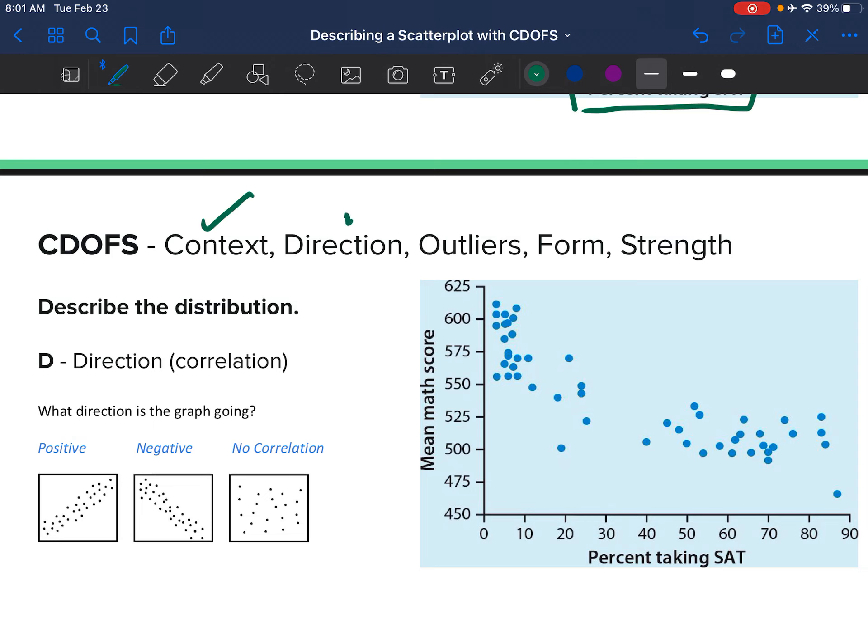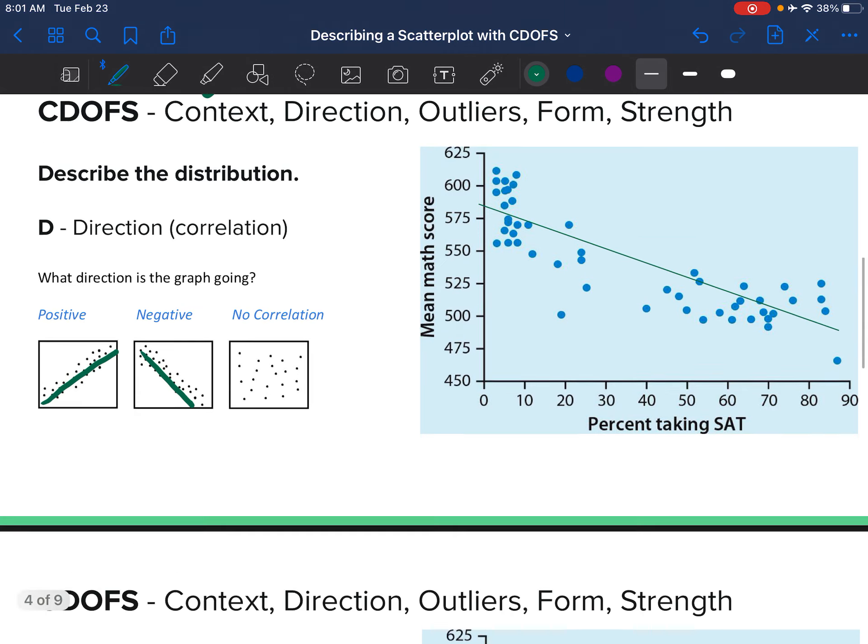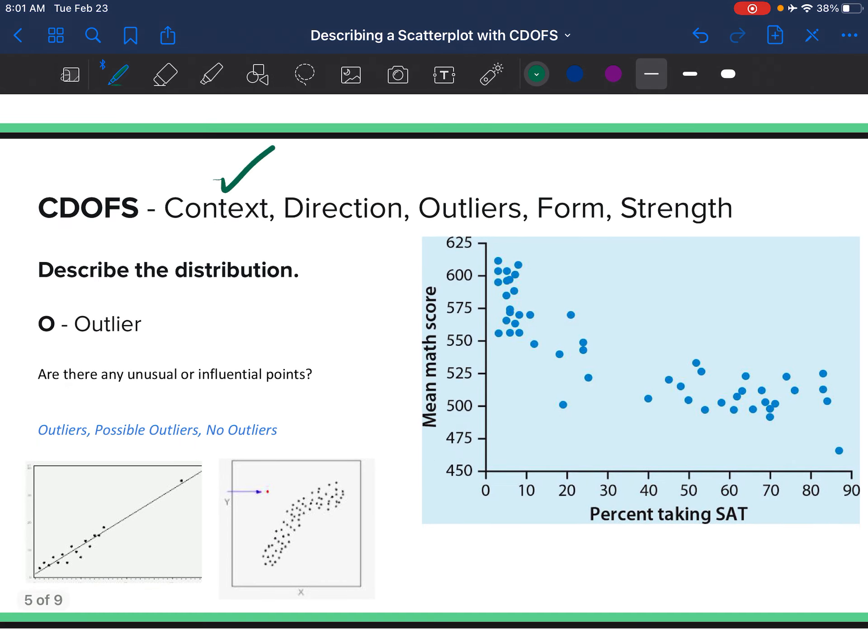Now we're going to look at direction. Direction is just telling us: is the graph positive, so it's going up? Is it negative, going down? Or is there no correlation and there's no real direction up or down? In this graph, there is a negative correlation—the points are showing a downward trend.